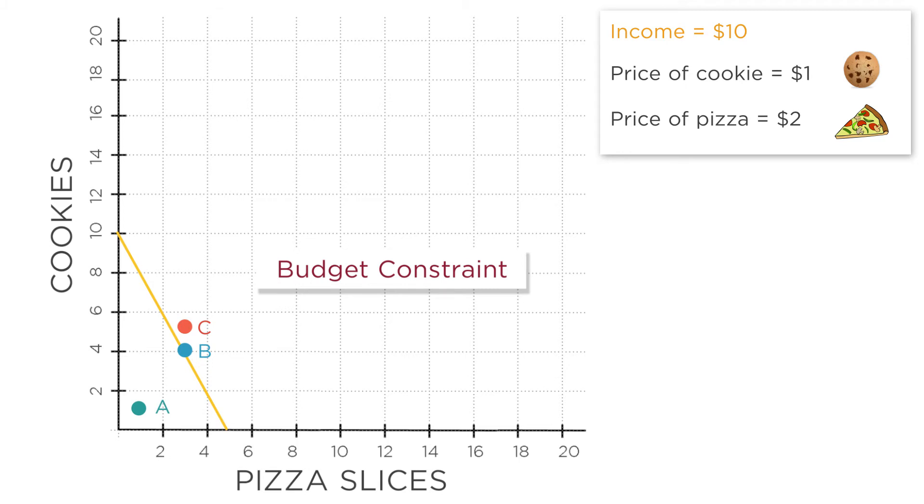Which of these points is unaffordable? That's point C. Point C is five cookies and three pizza slices, which costs $11, which is more than your $10 budget. Any point beyond the budget line is something you don't have the money to buy.